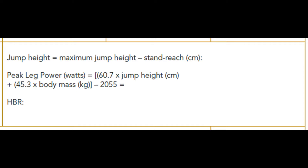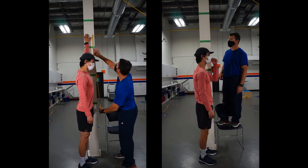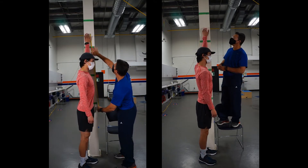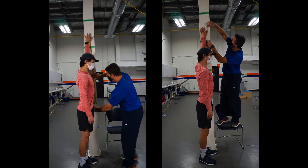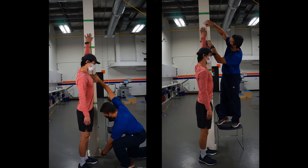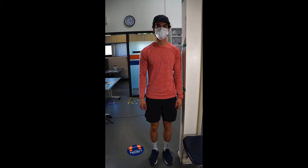The first thing we need to do is calculate their maximum standing reach. In the video on the right, you can see that we've taped off every 50 centimeters to make it easier to measure that standing reach. With the participant placing their arm all the way up, you can measure to the nearest 50 centimeters, or on the left, all the way to the floor using a measuring tape.